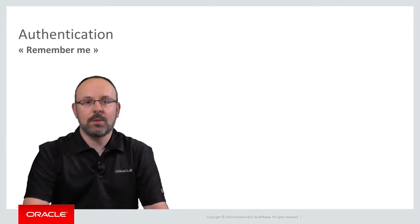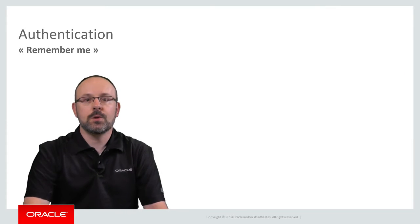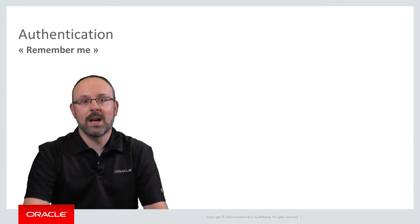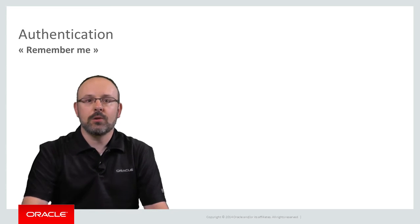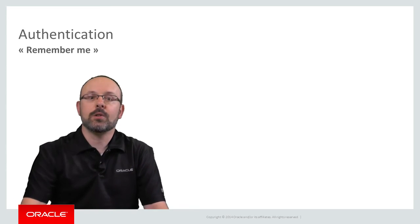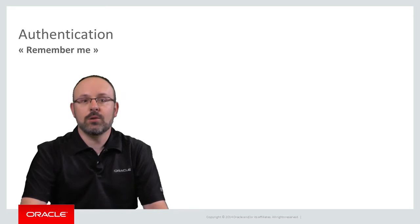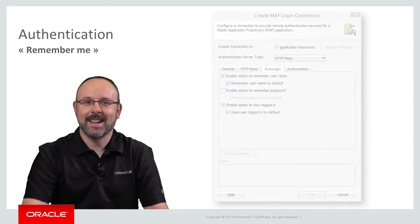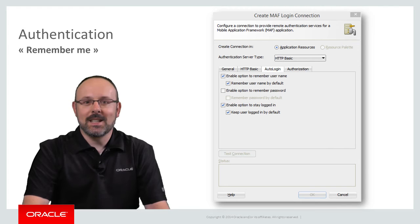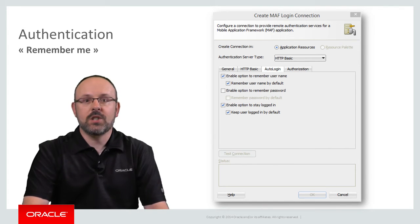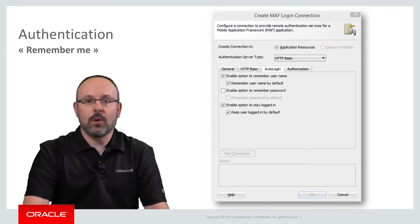When invalidation happens, users won't necessarily have to retype their username and password. What will happen depends on the auto-login settings for the authentication connection. The auto-login settings are located in a dedicated tab which is available for all possible connection types.